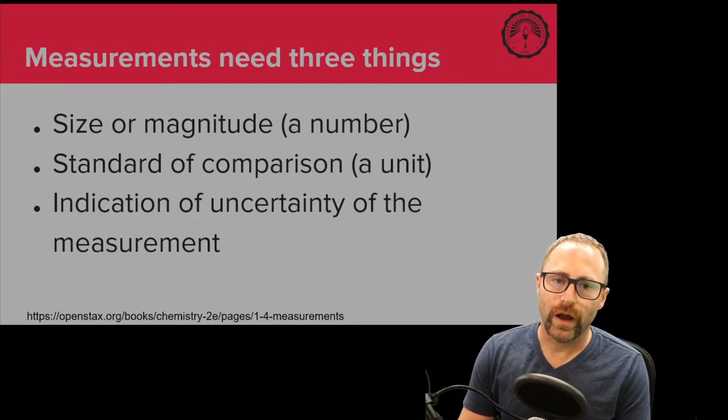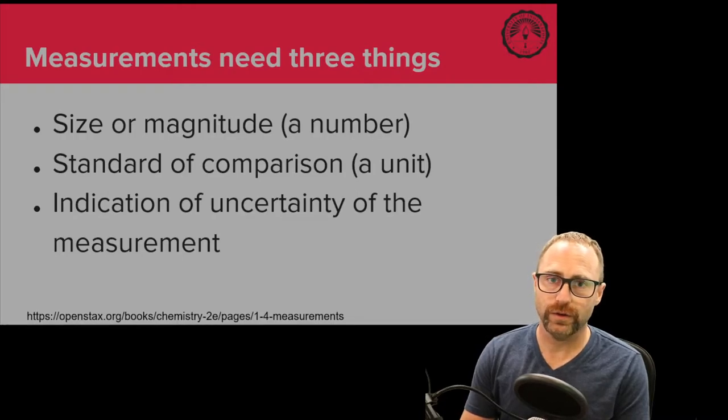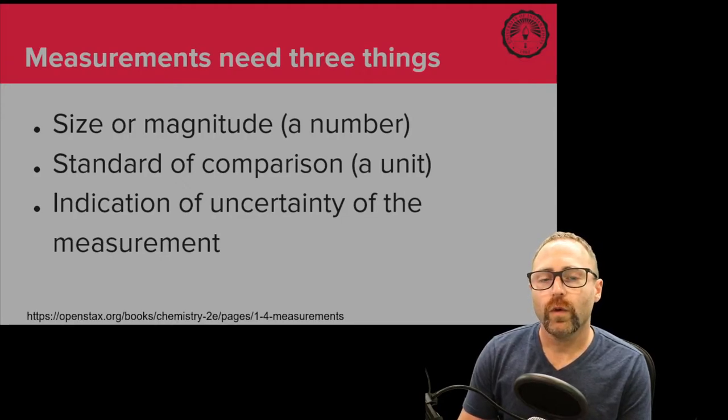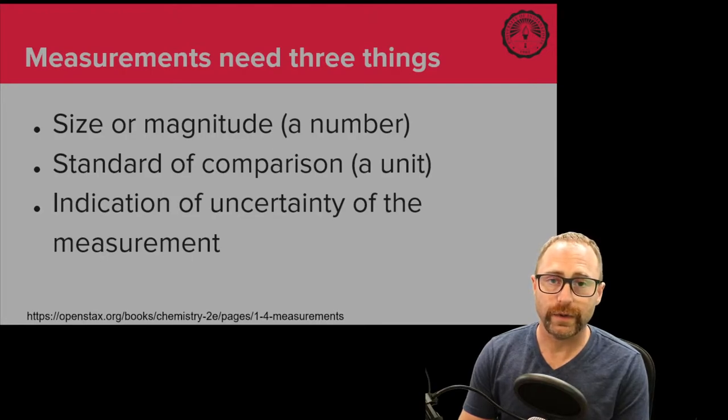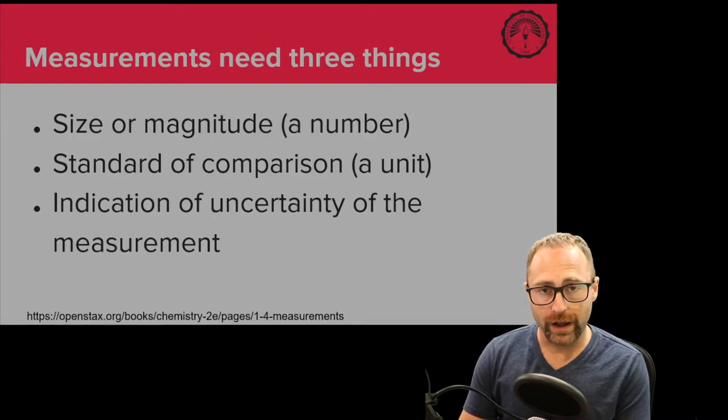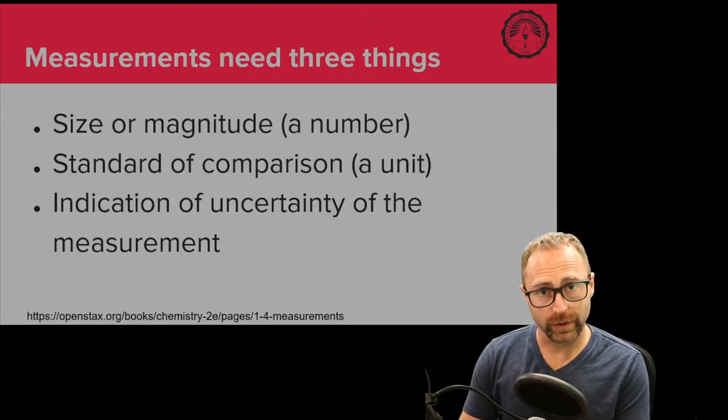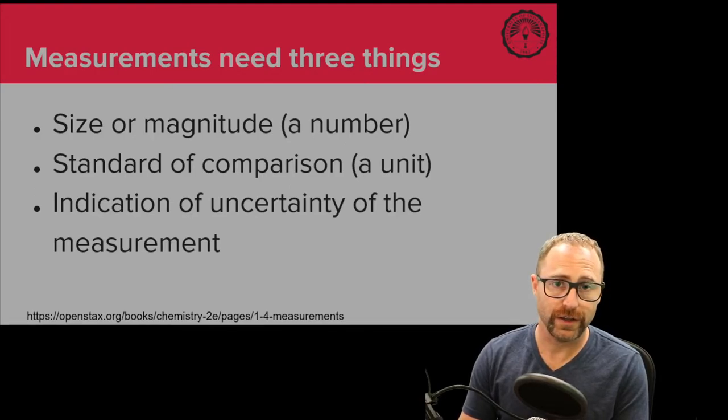So when we measure something and we want to convey the information about the measurement to a reader or anybody else, we need to convey three pieces of information. We need to tell the size or the magnitude of our measurement. This is usually done with a number. We need to present that information in some kind of standardized way, and we do that with a unit. This is typically, if you're measuring length, something like inches, or temperature you might say Fahrenheit or Celsius. Something that gives whoever you're presenting the information to some kind of bearing and understanding of the thing that is being discussed.